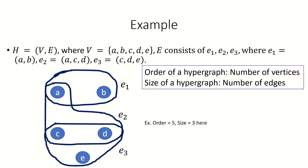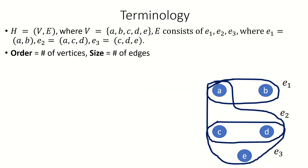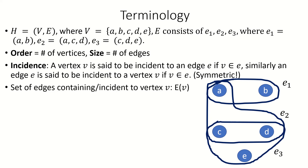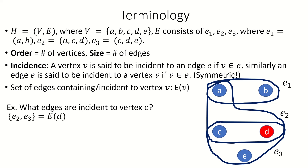Let's cover a little more hypergraph terminology. Like in graph theory, the edges that include a vertex V are said to be incident to V. The statement 'vertex V is incident to edge E' means that V is a member of E, and the statement 'edge E is incident to vertex V' means the same thing. The symmetry of incidence will be useful later when we talk about dual hypergraphs. The set of all edges incident to a vertex V is written as E of V. In the hypergraph shown here, what edges are incident to vertex D? They are E sub 2 and E sub 3, as those edges contain vertex D.